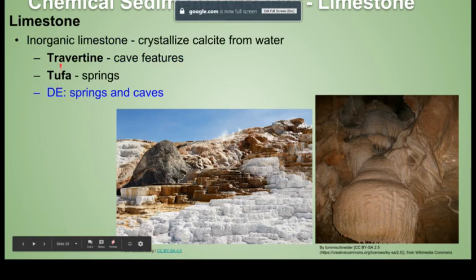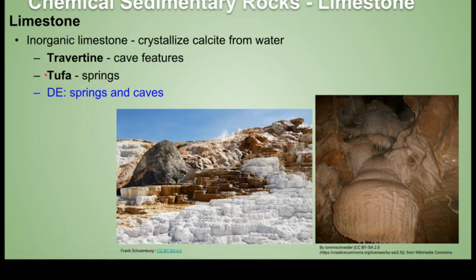We also have inorganic limestones like travertine and tufa. These form from the precipitation of calcium carbonate or calcite as the water carrying the ions for that calcite degases. Here is a picture of some tufa forming at Mammoth Hot Springs in Yellowstone National Park, the north end of Yellowstone. As the water leaves the groundwater system and emerges to the surface, it degases and releases its calcite in these beautiful tufa terraces.